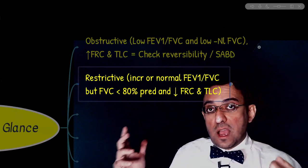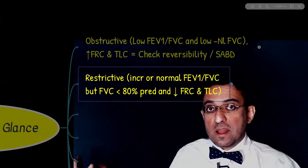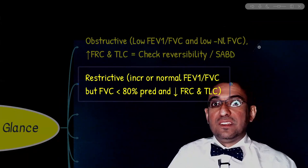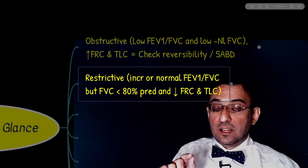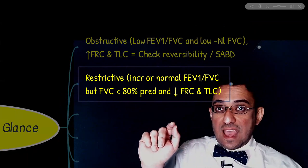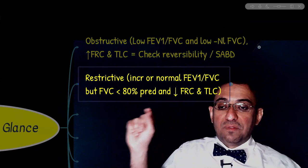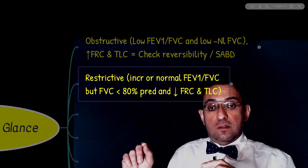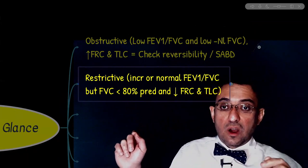If asked about the differential diagnosis of decreased FEV1 without any other information provided, the differential could be either obstructive or restrictive lung disease. Remember, decreased FEV1 is not specific to obstructive lung disease. However, in obstructive lung disease, FEV1 is significantly reduced while FVC could be reduced or normal. In restrictive lung disease, both FEV1 and FVC are reduced.